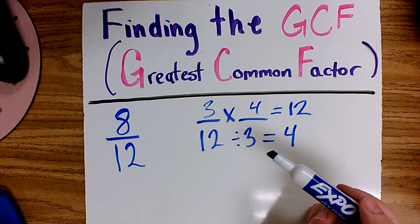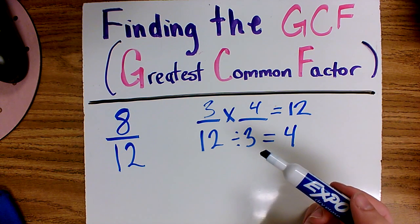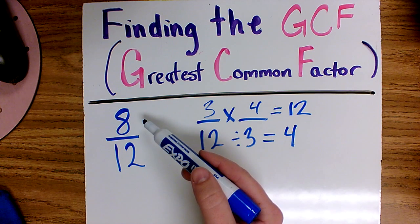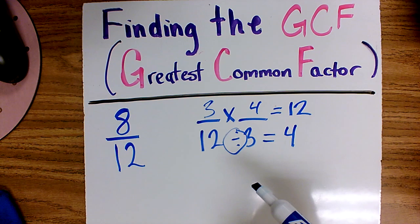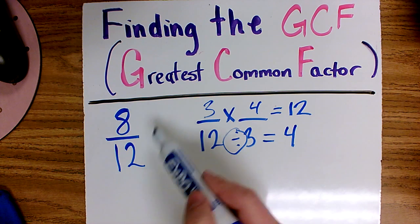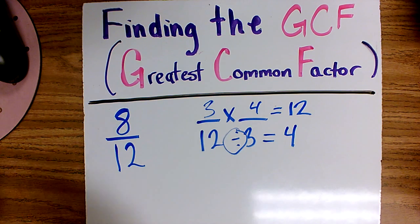When we find factors to reduce a fraction, what we're doing is finding the largest number that both the numerator and denominator can be divided by in order to make our fraction using the least amount of pieces. So let's give this one a try.